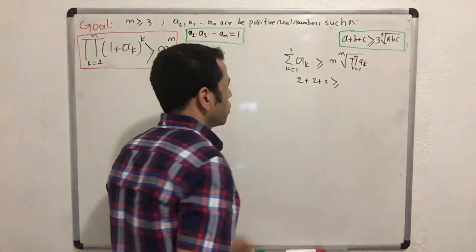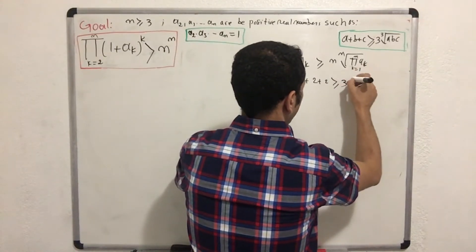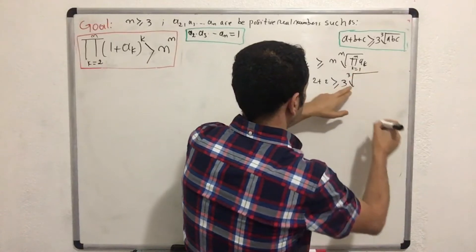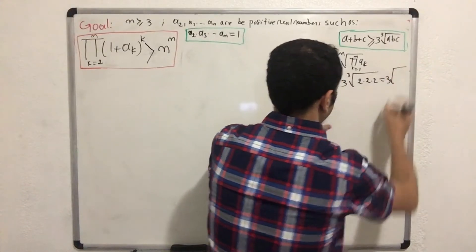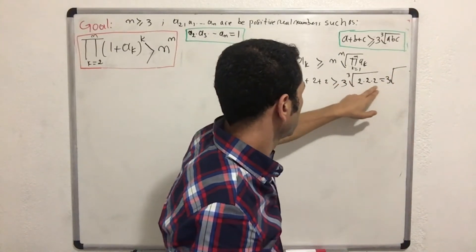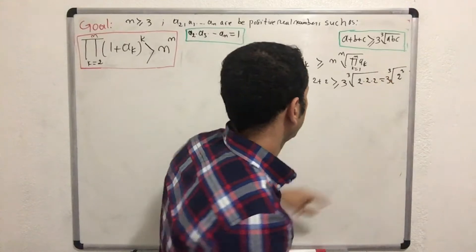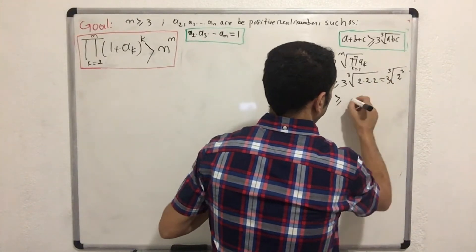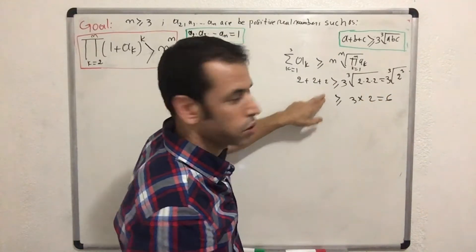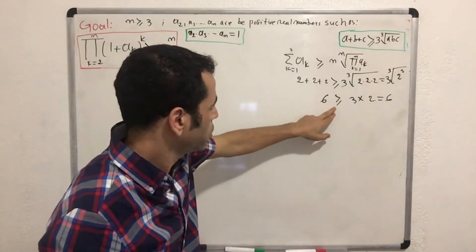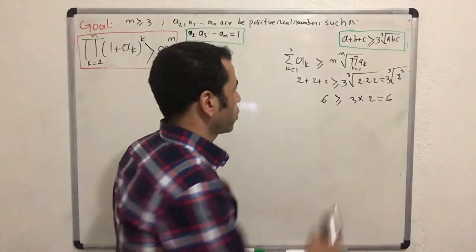How many terms do we have here? 1, 2, 3 terms. The product is 2 × 2 × 2. This one is a cube root, so we have 8 which is 2^3. Then this becomes 3 multiplied by 2, which is 6 — that is 2 + 2 + 2 = 6. So 6 ≥ 6. I'm giving you this example to make sure this identity is correct.